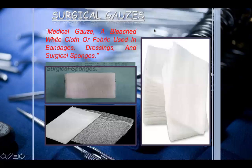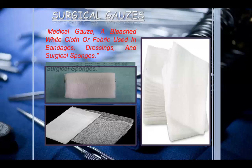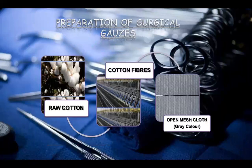Surgical gauze is a bleached white cloth or fabric used in bandages, dressings, and surgical sponges. During a cut in the skin, surgical gauze is applied. These have various pharmacopoeial specifications — mostly British Pharmacopoeia (BP) or British Pharmacopoeia Codex — so they are not just prepared as regular cloth. The preparation of surgical gauze uses raw cotton fibers, open mesh cloth, and grey cotton of different types.